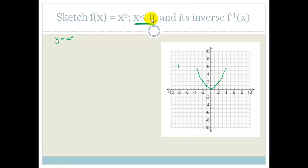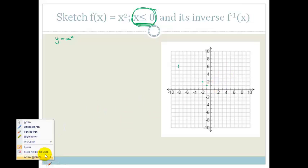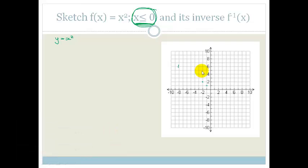They said they only wanted the values for x smaller than or equal to 0. So they don't want this half of the graph. They only want this half of the graph. So let's now erase that half of 0. We're not allowed to. Okay. So let's now redraw it. Okay. So we only want the values for x is smaller than or equal to 0. So that's our graph there. Okay.